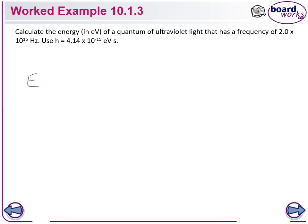So our energy is equal to HF. Here we are using H in electron volts. So 4.14 times 10 to the negative 15 multiplied by our frequency 2 times 10 to the 15.